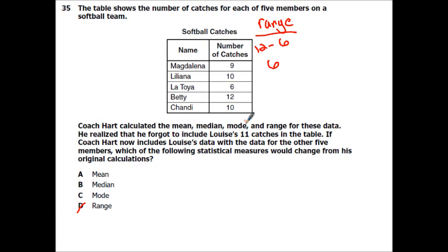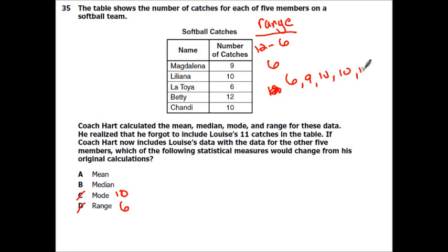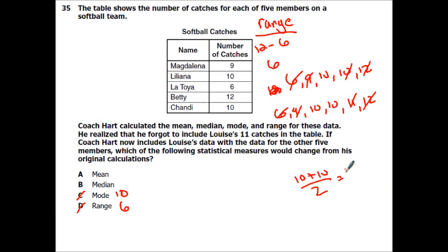Mode is the most. None of the others had 11, so 10 is still the mode — that doesn't change. My median right now: ordering the data — 6, 9, 10, 10, 12 — the median is 10. If I put the 11 in: 6, 9, 10, 10, 11, 12 — now I add the two middle values together and divide by 2: 10 plus 10 equals 20, divided by 2 is 10. So the median didn't change either.